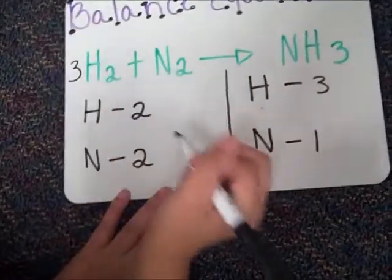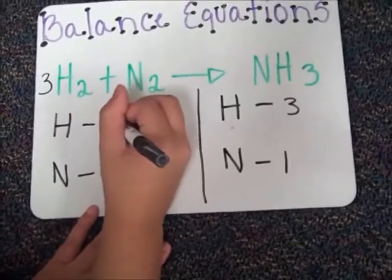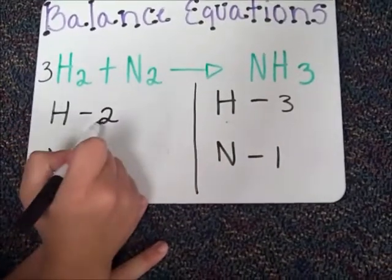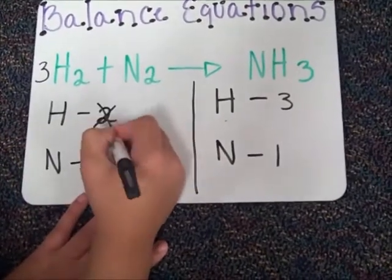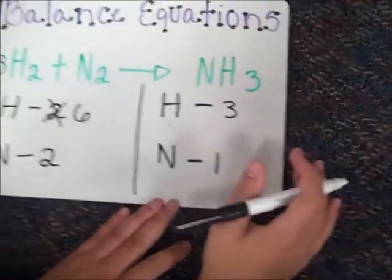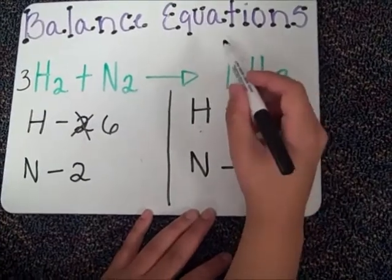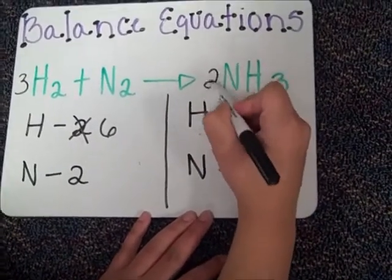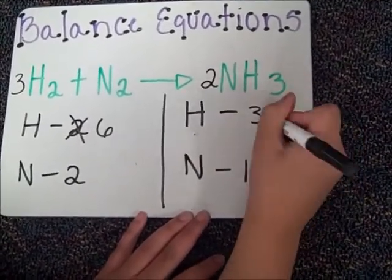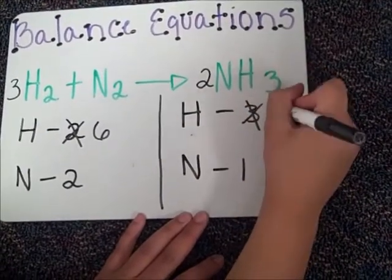Multiply this by 3, because these two would equal 6. So we cross out the 2 and make that a 6. Then, I would come over here and multiply this by 2, because 2 times 3 equals 6. So we cross that out and make that a 6.